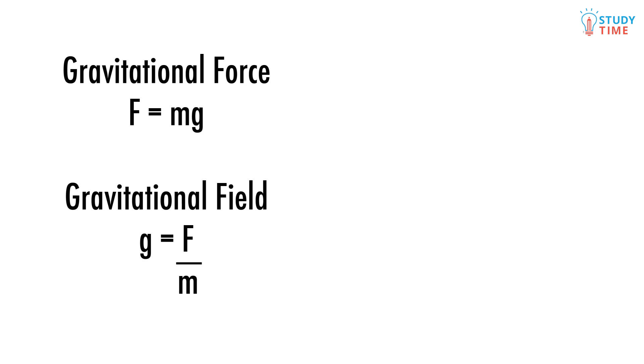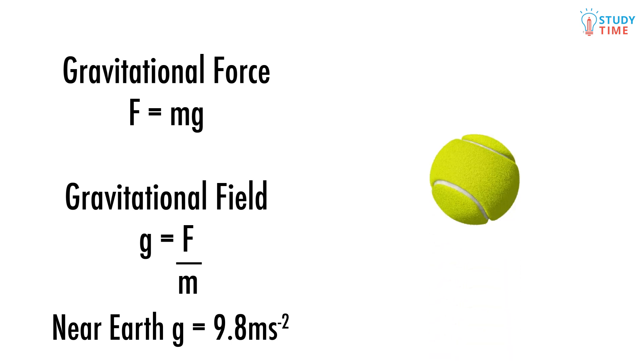The strength of gravity is g. We use the equation F equals mg to describe what gravity does to an object. But look what happens when we rearrange this to g equals F over m. Now we can say that the strength of the gravitational field depends on how much force gets applied to an object, like a tennis ball, and how much mass that tennis ball has.